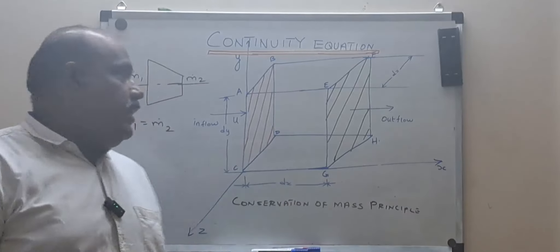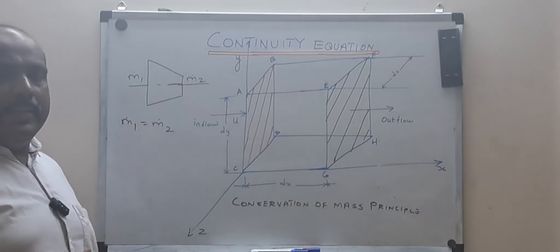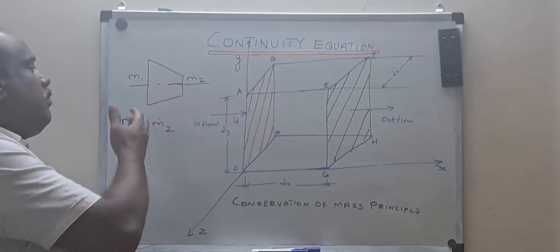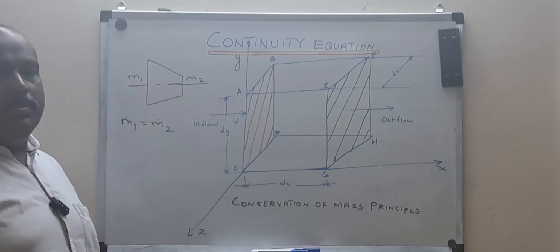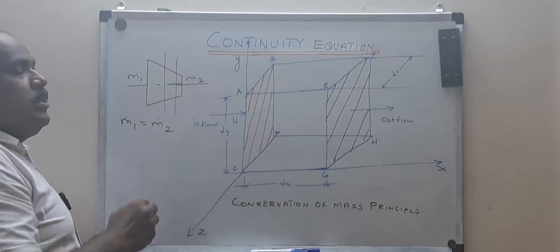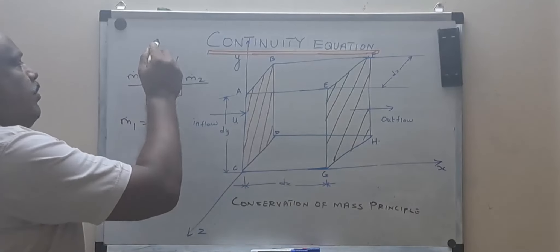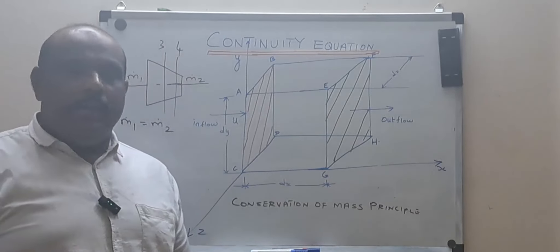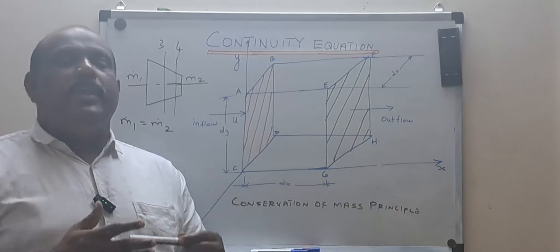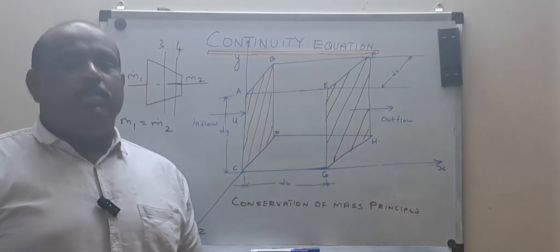What does conservation of mass mean? If I take any engineering application device, for example a convergent nozzle, the mass flow rate at inlet should be equal to the mass flow rate at exit. This exit can be anywhere — you can take any two planes. At planes 3 and 4, ṁ₃ should be equal to ṁ₄. The mass flow rate between any two sections remains constant. This is the conservation of mass principle.